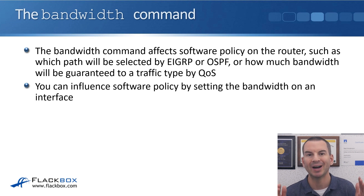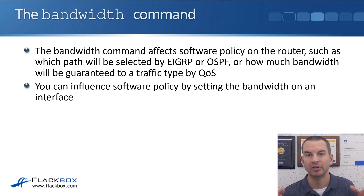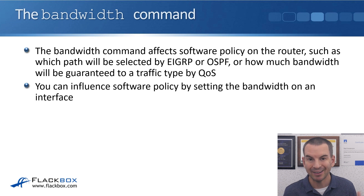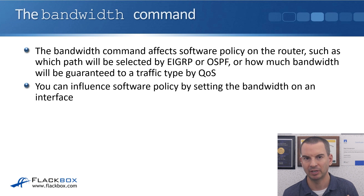You normally want the bandwidth to actually match the physical interface. On an Ethernet interface it's going to do that by default anyway. On a serial interface, it's going to default to 1.5 megabits per second always — so if it's actually a 64k or 128k interface, you're definitely going to want to set the bandwidth command on that interface to make sure the bandwidth, which affects the software policy, is also matching the actual physical bandwidth. You don't have to have them matching — sometimes you want to override what would happen by default, and it is possible to set the bandwidth differently to influence software policy.